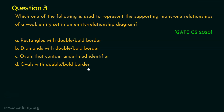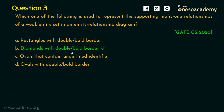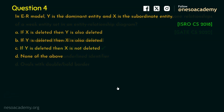The right answer is option B — diamonds with double or bold border. Relationships are represented with diamonds, and for a weak entity set the identifying relationship is represented with a double diamond or bold border. Some conventions use double border, others use bold, to indicate it is a weak entity. Question number three is done.